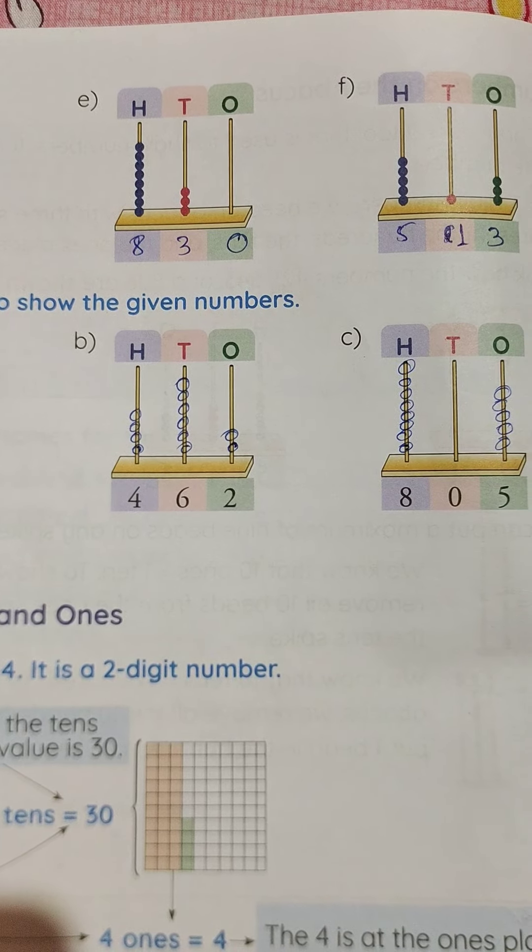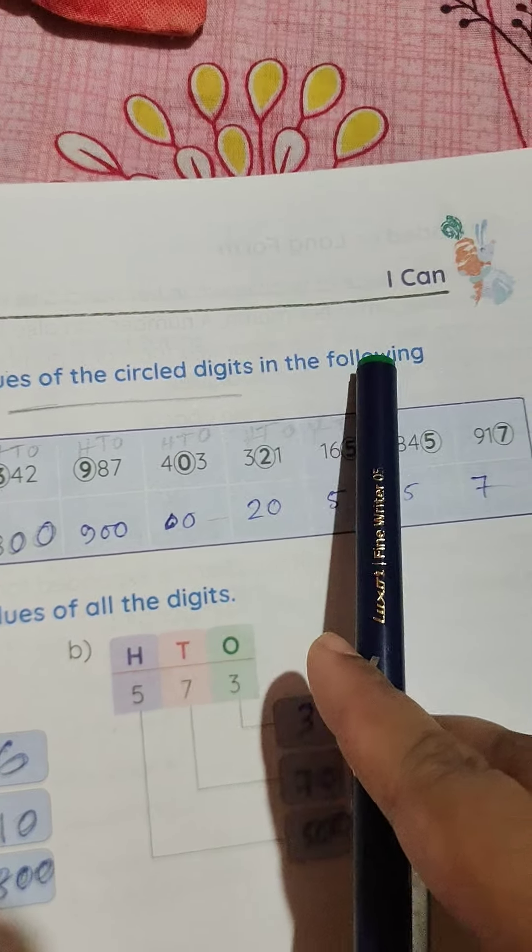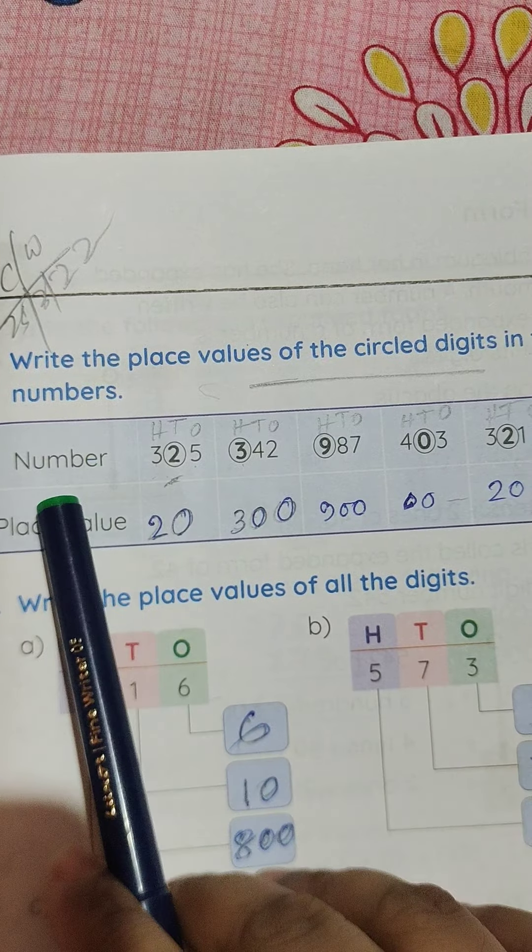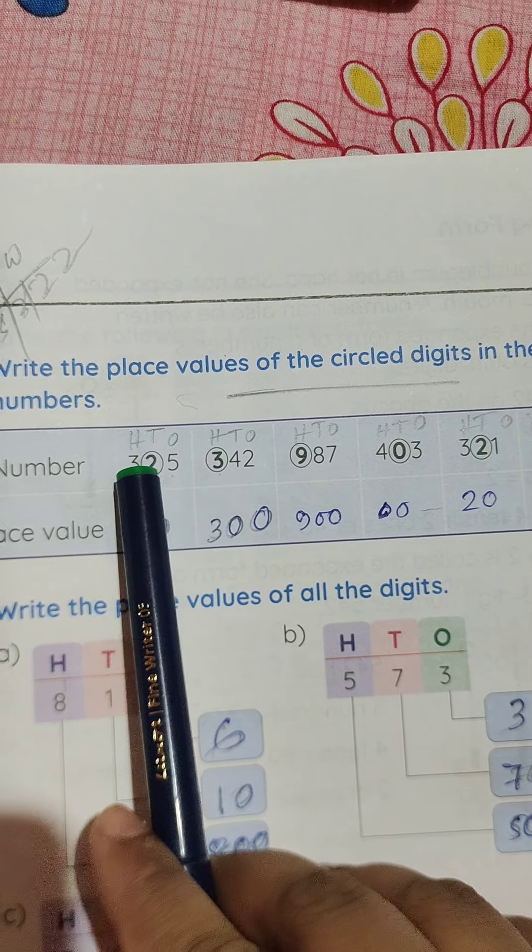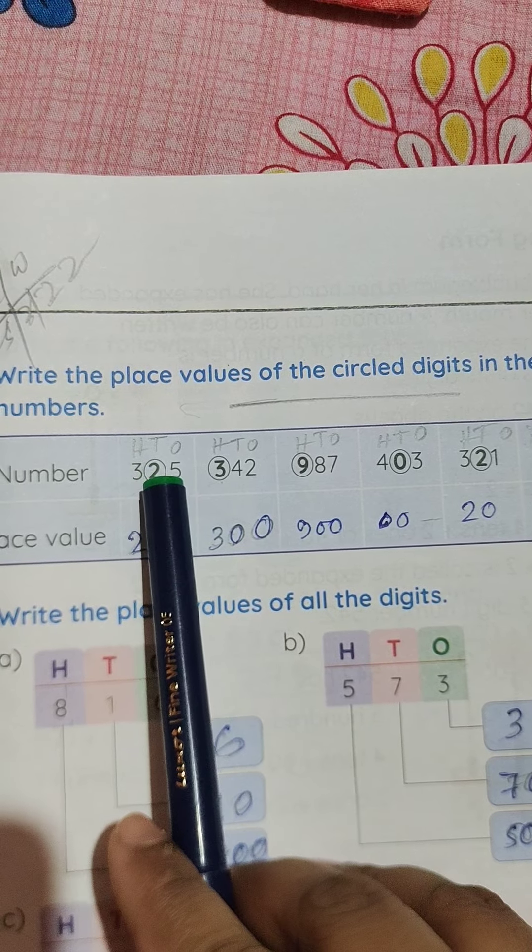Turn over the page. Write the place values of the circled digits in the following numbers. Number is 3, 2, 5. The circled part is 2. This is 20.